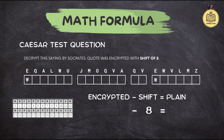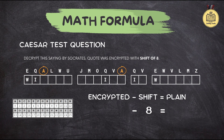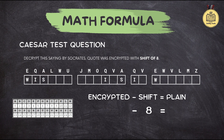For the third letter, A is represented by the number 0. Zero minus 8 puts us at negative 8; add 26 and that gives us 18, which is S. So far we have WIS. If we keep going with the formula we'll eventually get the full quote — and that quote is "wisdom begins in wonder." Now that's a quote worth decoding.